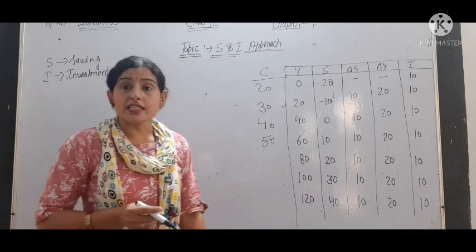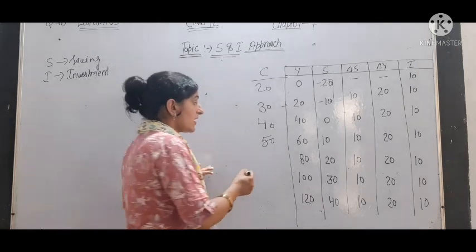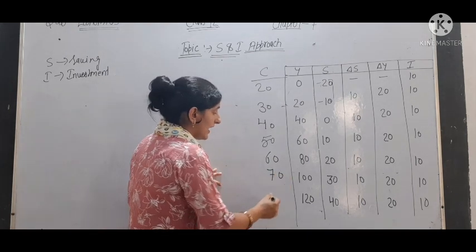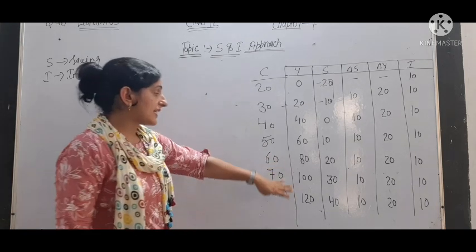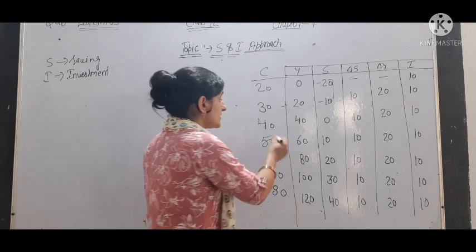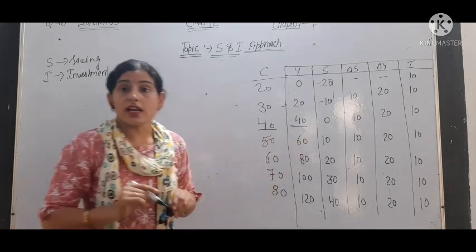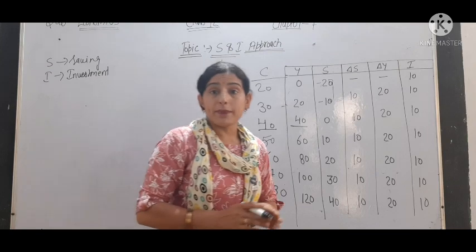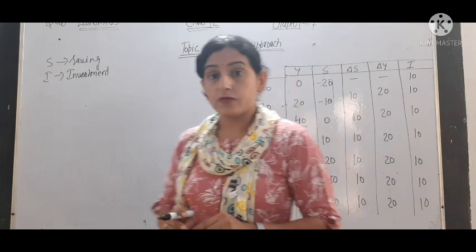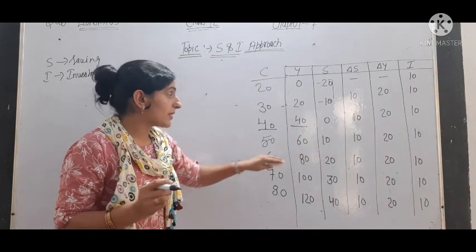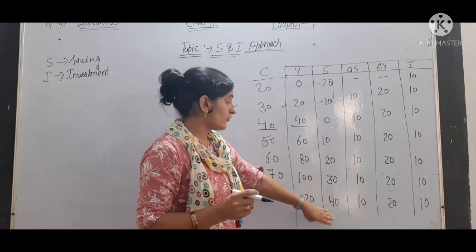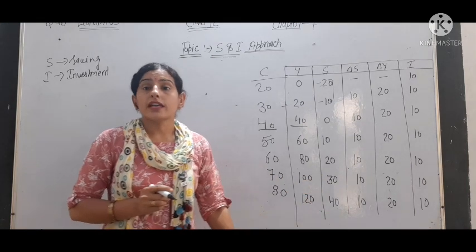As income increases from 60 to 80, consumption is 60; then income 80 to 100, consumption is 70; then income 100 to 120, consumption is 80. You can see that as income increases, consumption also increases. There is a point where Y and C become equal; after that point, people are consuming but a part of income is used for saving. Savings start at 10, 20, 30, 40 — as income increases, saving also increases. There is a positive relation between income and saving.